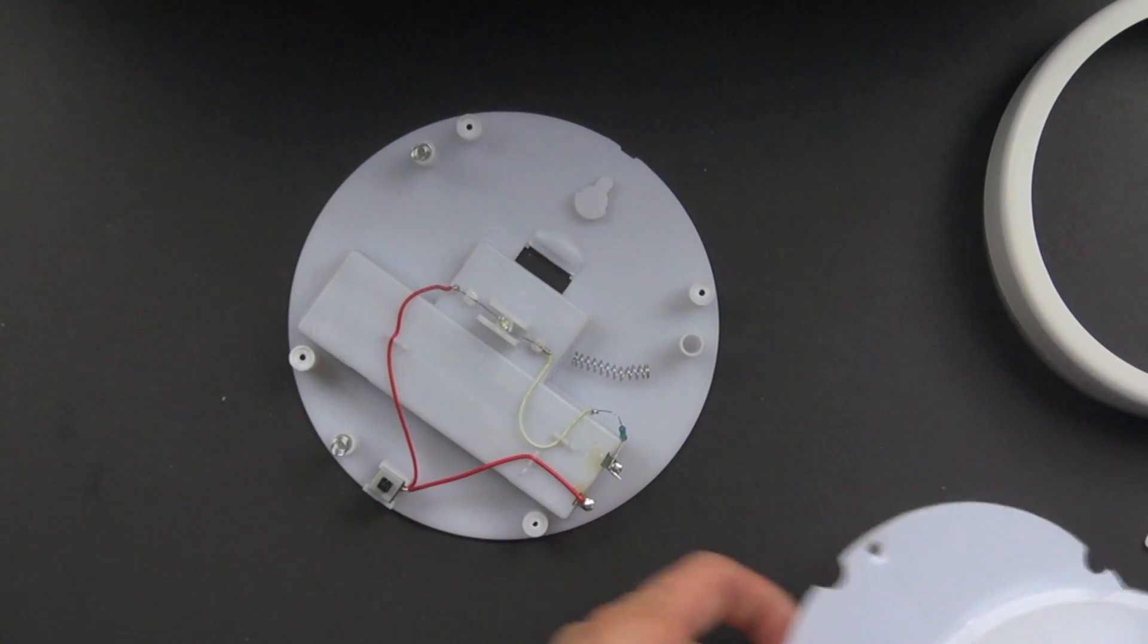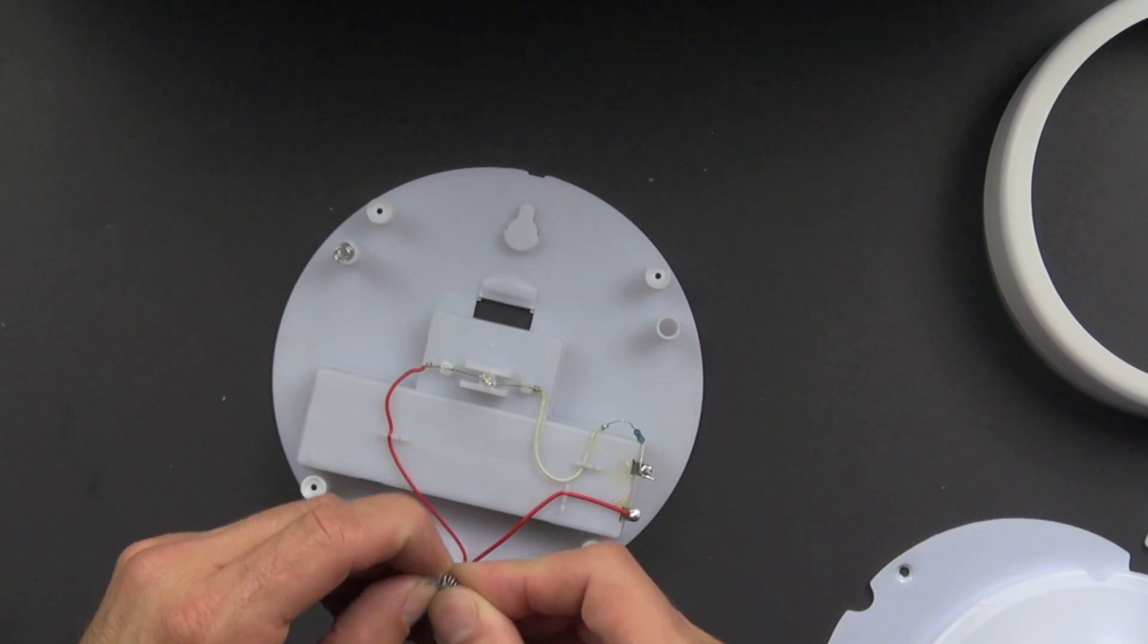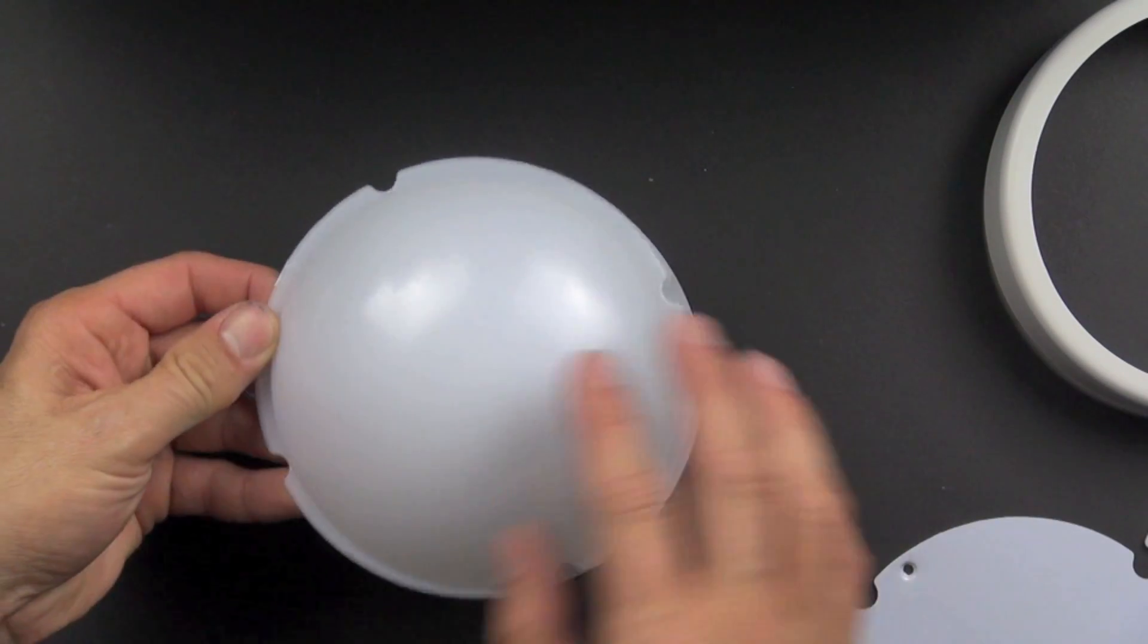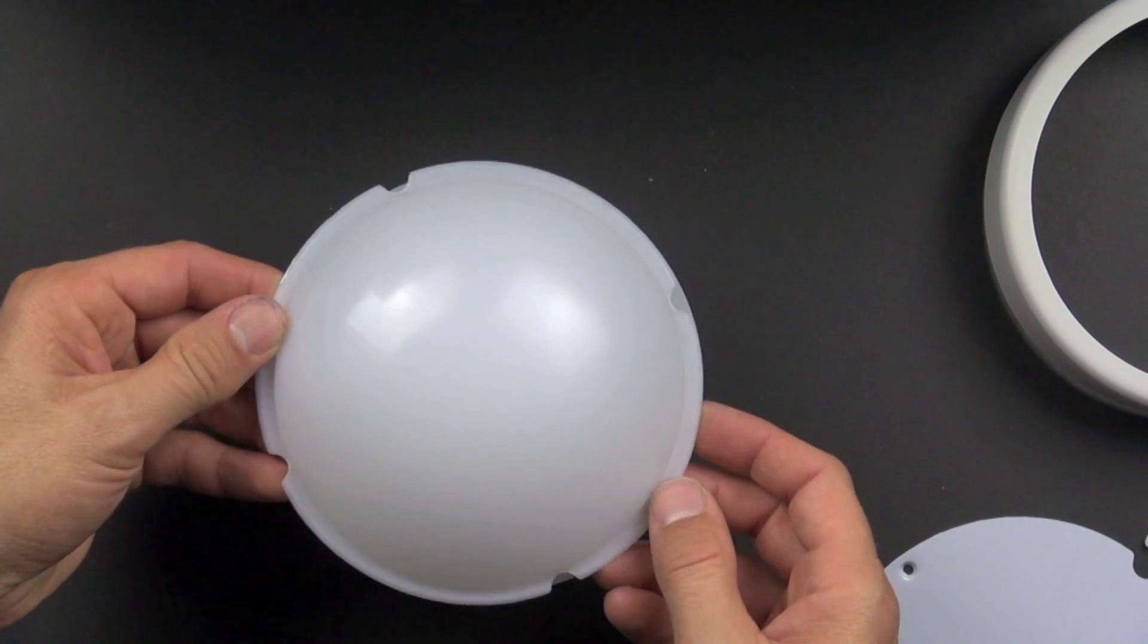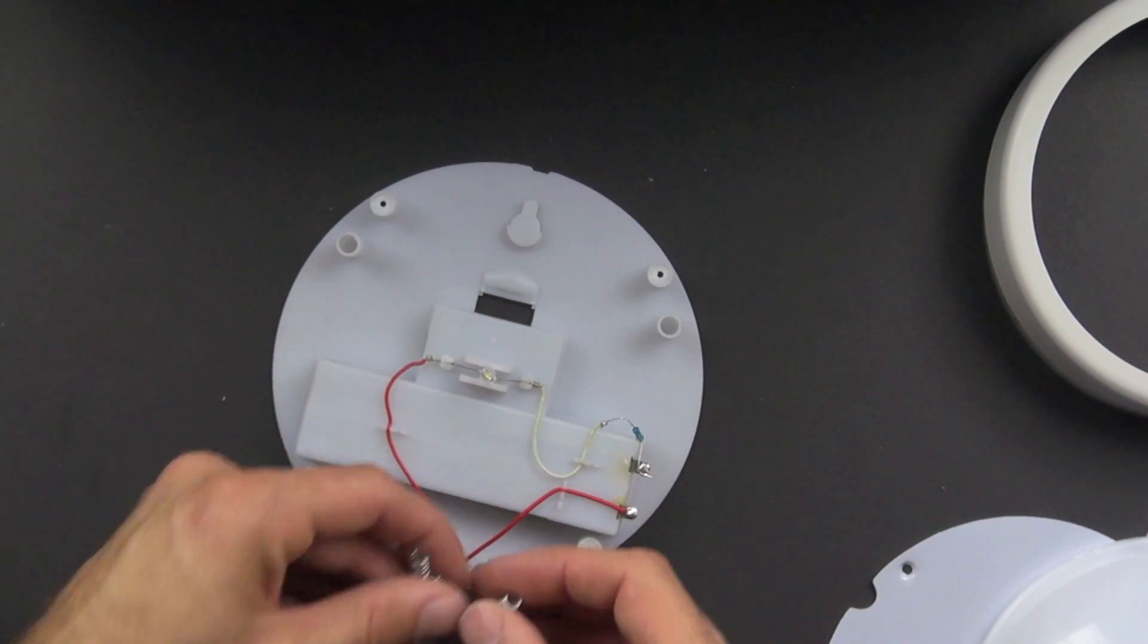All right. So let's take a look at the parts inside here. So we've got some springs and these springs cause the dome to return to its regular position. And so we have three different springs here. We'll remove those.